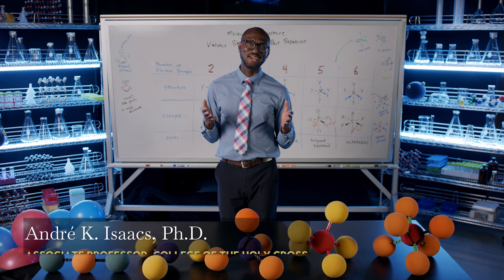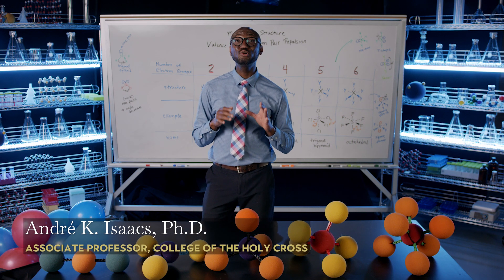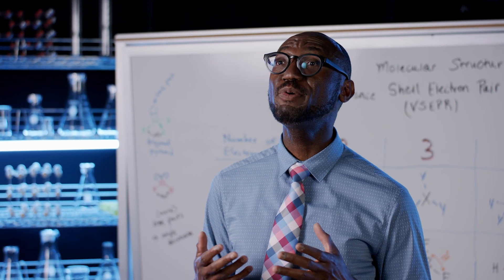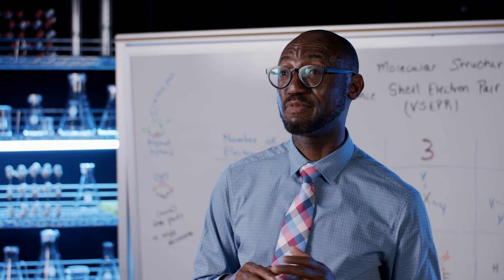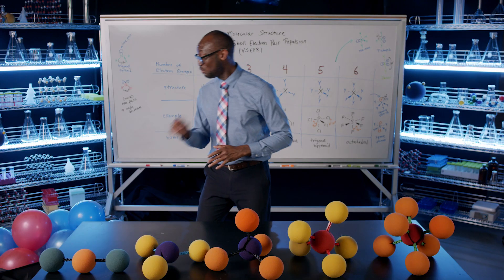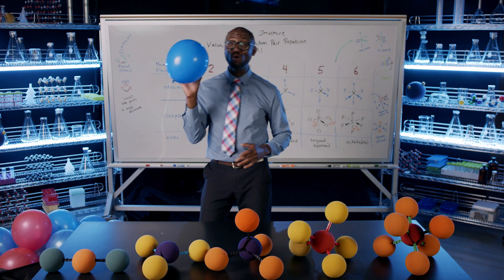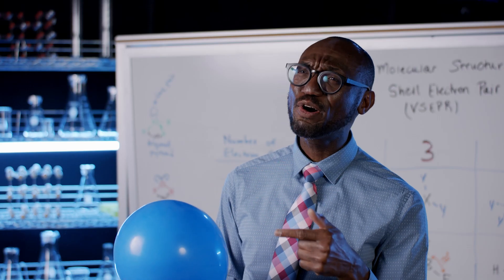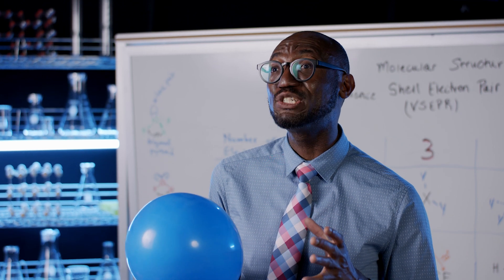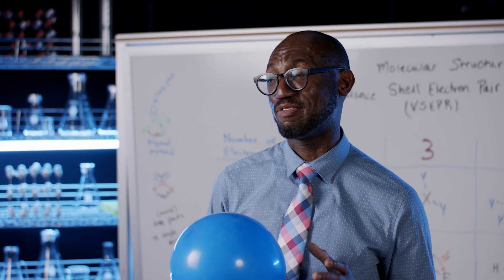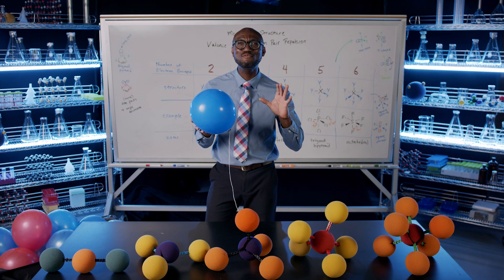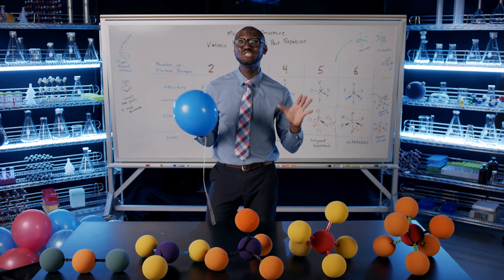Before we begin, electrons are negatively charged and are usually found in pairs. Like charges repel, so each pair will want to be as far apart from each other as possible. I'm going to use a balloon to represent one pair of electrons. The balloon is perfect because it simulates how much space the electron pair occupies. Now watch how everything falls into place and the unique shapes develop.